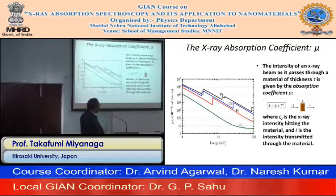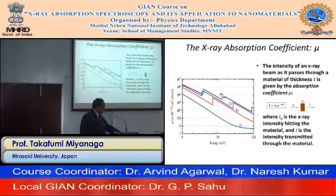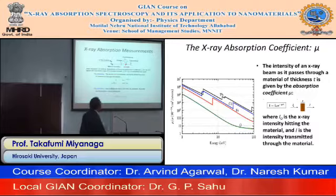I₀ is the intensity before it enters the material, t is the thickness of the material, and I is the intensity after it is transmitted through the material. That is the Beer-Lambert law.